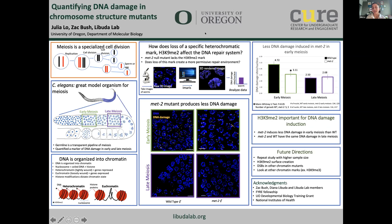C. elegans are a great model organism for studying meiosis due to their organized germline and transparent nature, allowing visualization of all meiotic stages in order. C. elegans also have a marker for DNA damage in early and late meiosis. DNA is organized into chromatin — tightly coiled DNA around histone proteins forming nucleosomes. Heterochromatin is highly compacted and inaccessible, while euchromatin has a more open nature. For example, H3K9Me2 is a heterochromatic mark, meaning two methyl groups were added to histone 3.